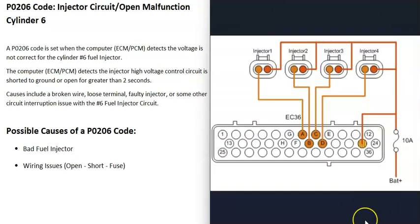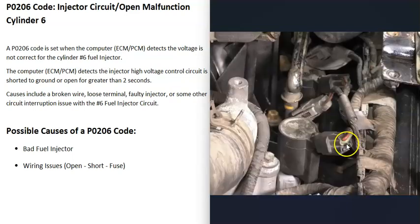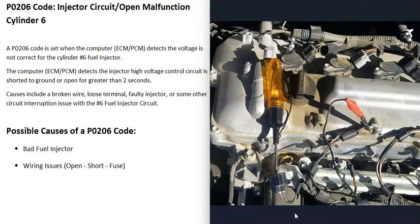If the fuel injector tests good, the next thing to check is the wiring. It's always a good idea to get a wiring diagram for your specific vehicle. Typically, fuel injectors have two wires: a positive voltage wire (usually 12 volts) and a negative voltage wire. The 12 volts on the positive side is always on when the key is in the ON position. Use a test light or meter with the key on and verify you're getting 12 volts to that circuit — if not, there's a problem on the positive side.